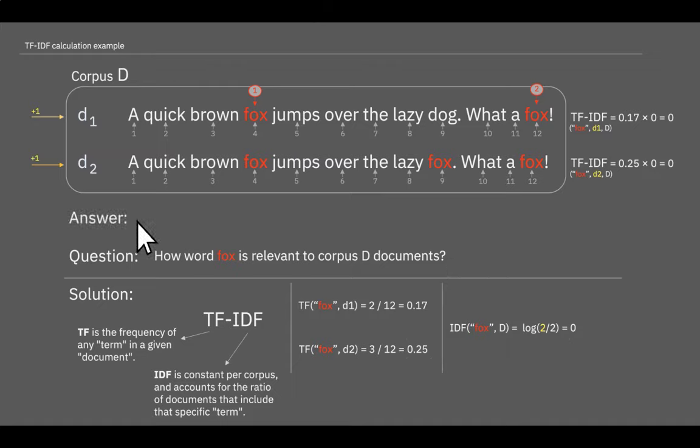And the answer is: using TF-IDF that we have calculated, the word fox is equally relevant for both documents d1 and document d2 because we have the same values of TF-IDF. It's 0.